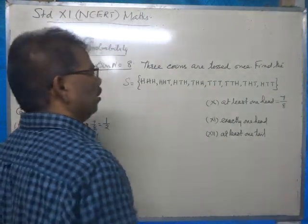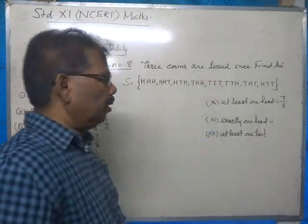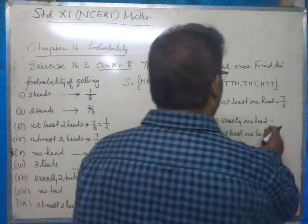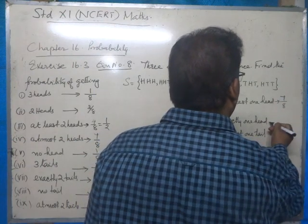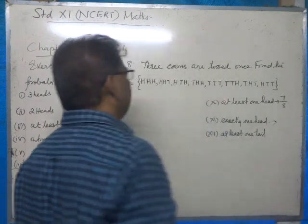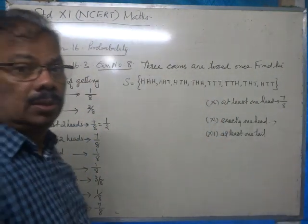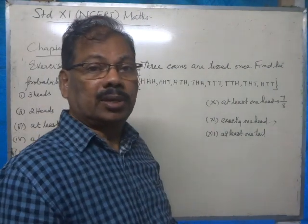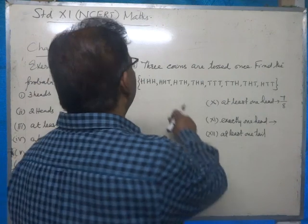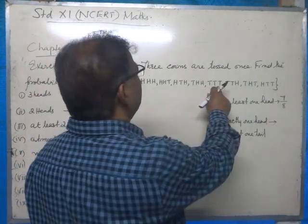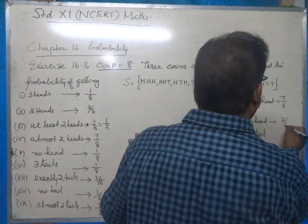Part eleven asks for the probability of getting exactly one head. We look at the occurrences in which there is exactly one head — one, two, three. Therefore the probability is three by eight.